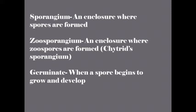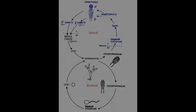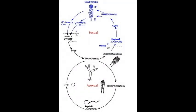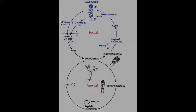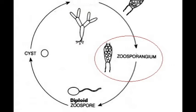Now let's take a look at the reproductive cycles. We are going to begin with the asexual reproductive cycle because it is a little less complicated and will help illustrate some of the basic mechanics of chytrid reproduction. We are going to start with the developing chytrid. As the chytrid matures, it develops a zoosporangium.